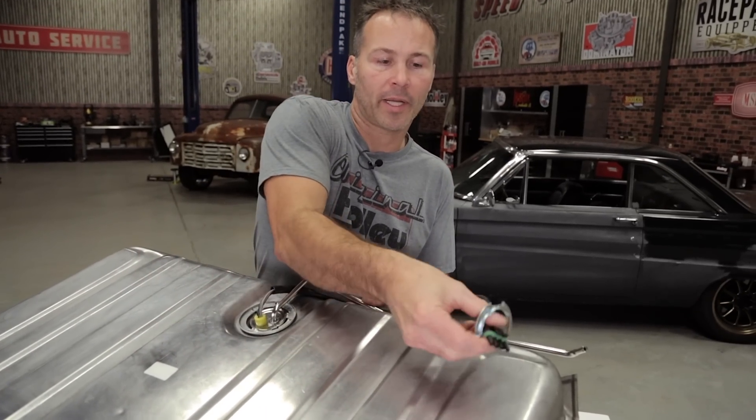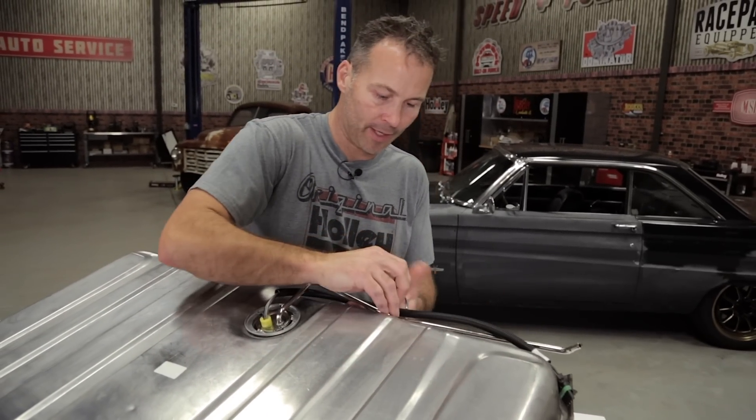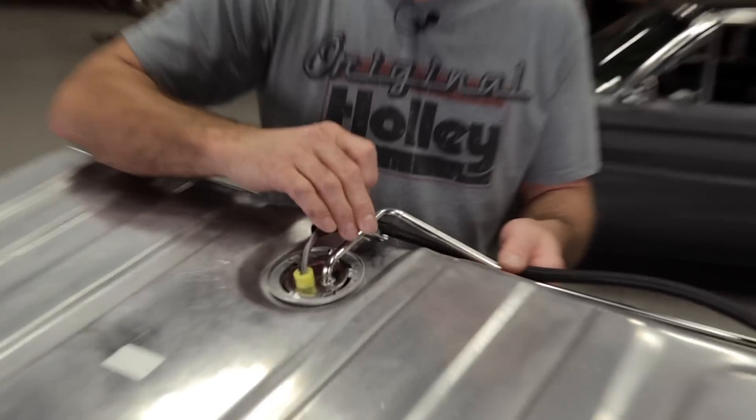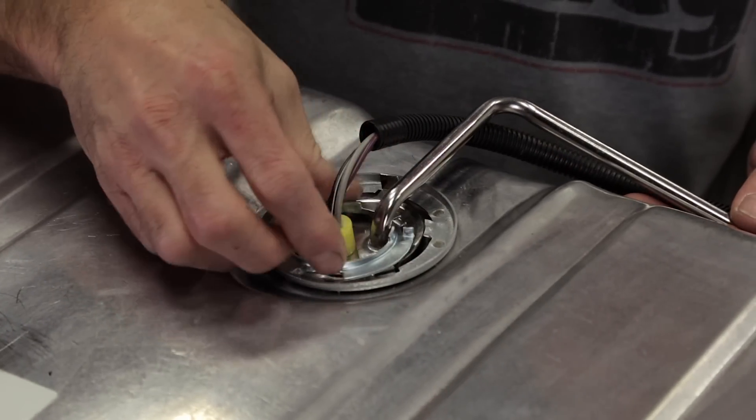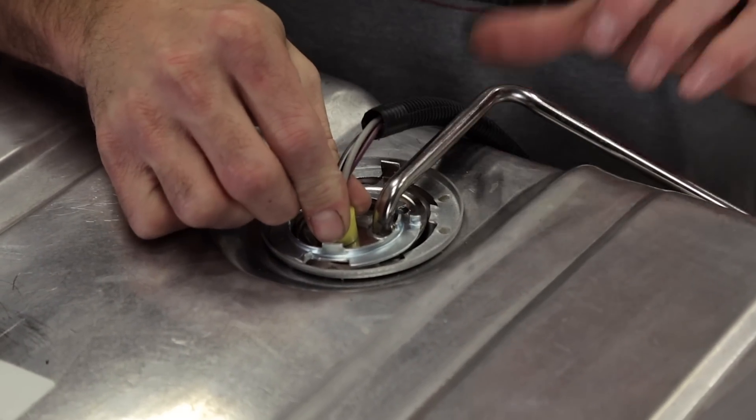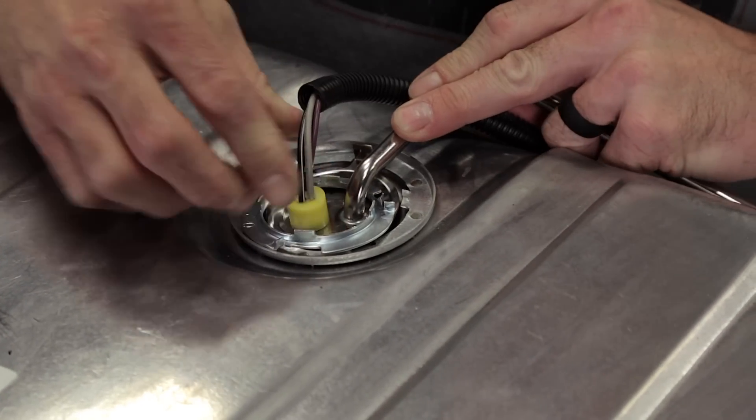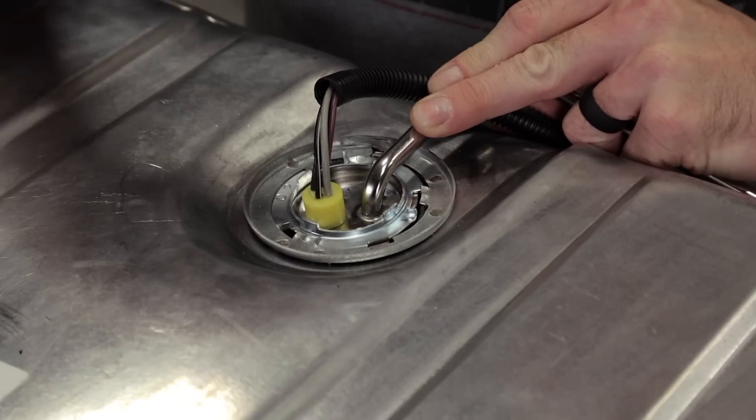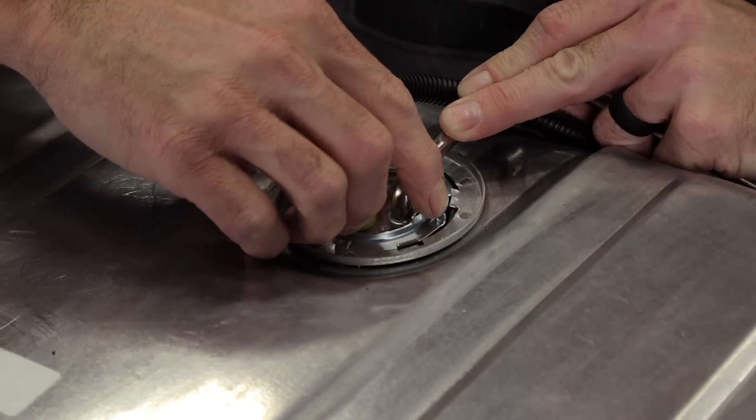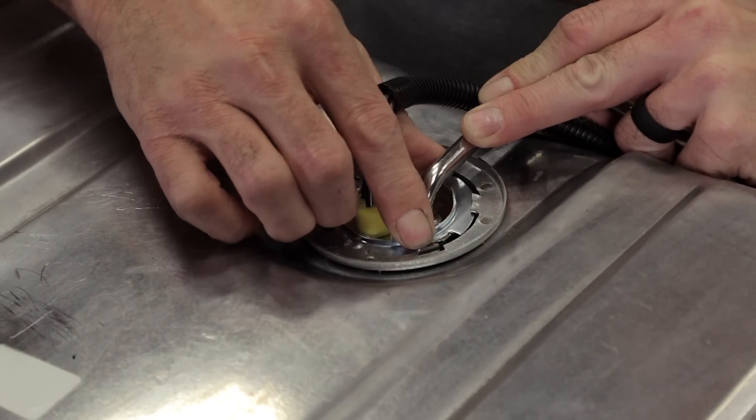Now we can take the included locking ring and feed it over our electrical connection and the feed line and position it over the tank opening. Make sure that the o-ring gasket is still centered in position. Then install the included lock ring and rotate it clockwise hand tight. You can use a screwdriver or drift to finish securing it.